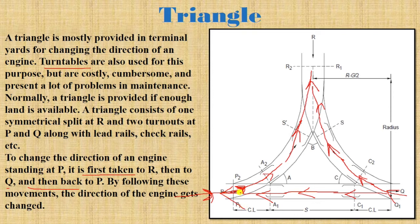The engine goes from R to Q and then back to P, at which point its face — that is, its direction — is now on the opposite side. So the direction of the engine is changed. This is the principle of the triangle, similar to a reverse movement.